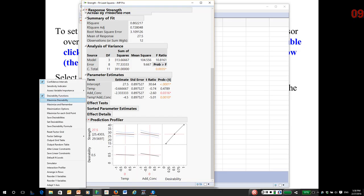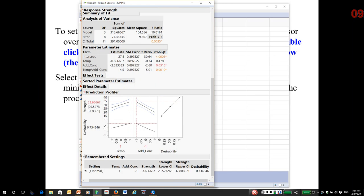search for settings of temp and additive concentration that give me the maximum response, because that's what is most desirable. So go back to the prediction profiler menu, and select maximize and remember. So JMP has found that if I run at high temperature and low concentration,